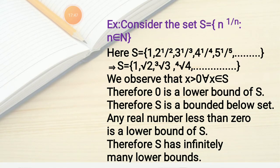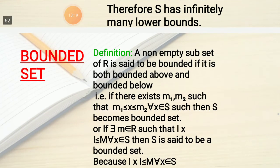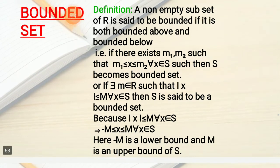For S = {n^(1/n) : n ∈ N} = {1, √2, ∛3, 4^(1/4), 5^(1/5), ...}: we observe X > 0 for all X ∈ S, therefore 0 is a lower bound of S. By definition, S is a bounded below set. Any real number less than 0 is also a lower bound, so S has infinitely many lower bounds.